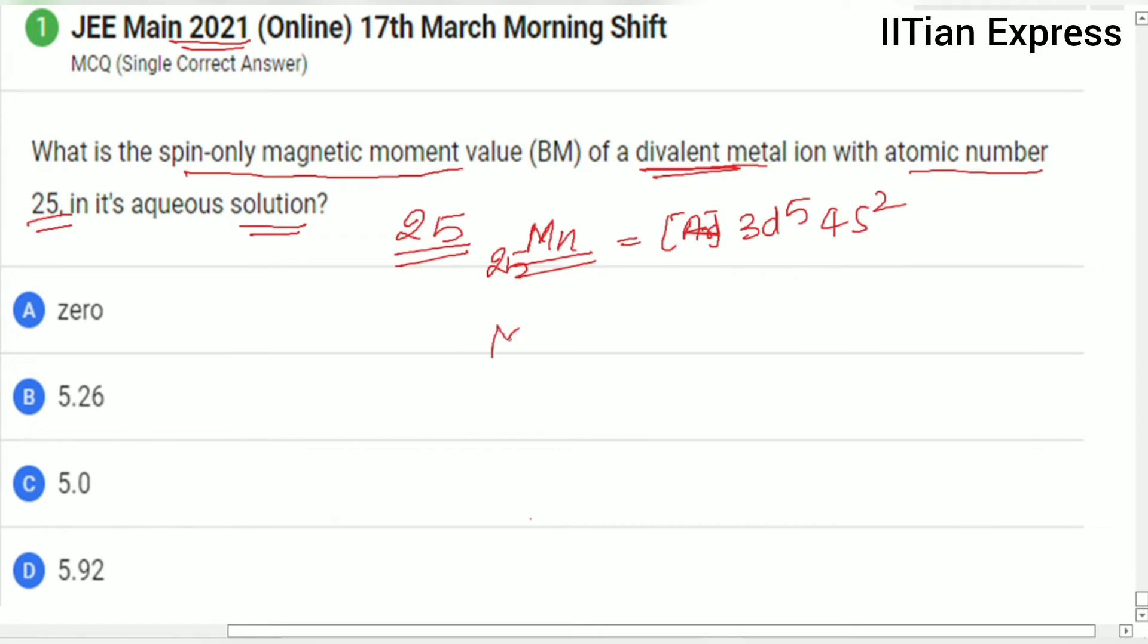It's saying divalent metal. So if we remove two electrons, it becomes Mn²⁺, and then its electronic configuration will be argon core 3d5 4s0. Here we have five unpaired electrons.